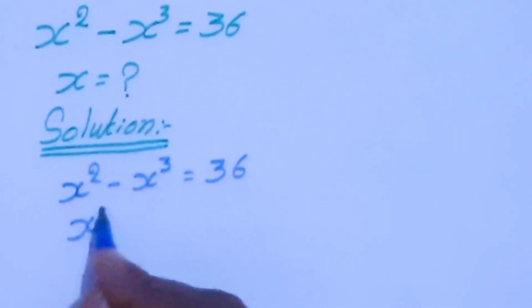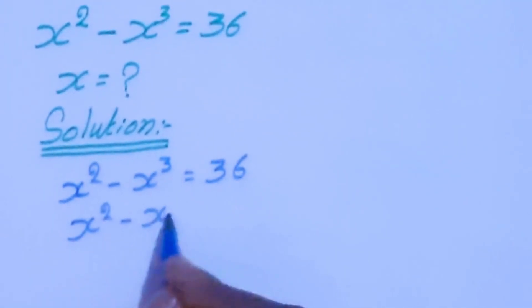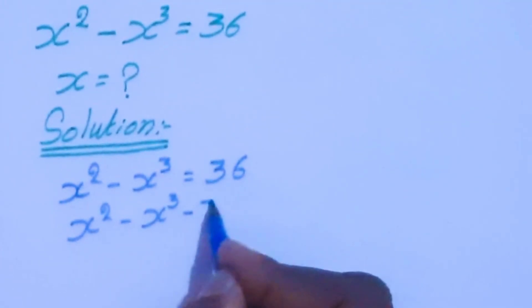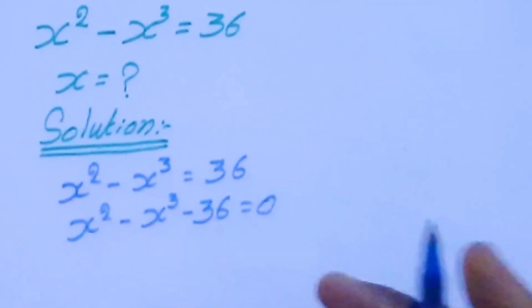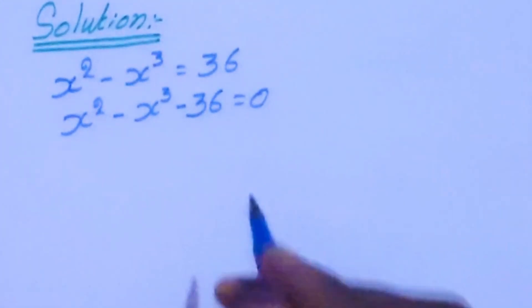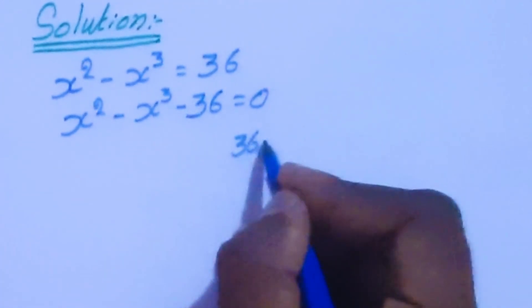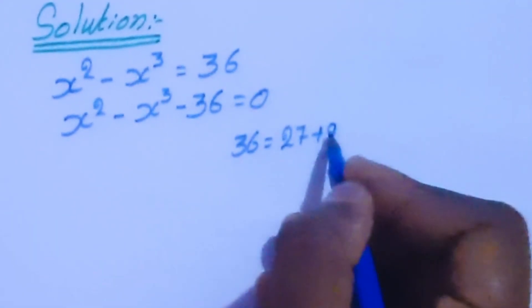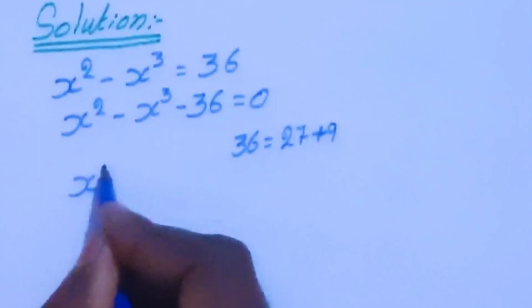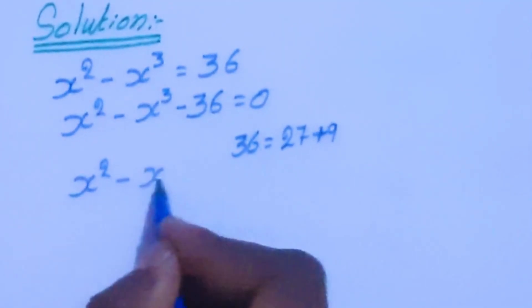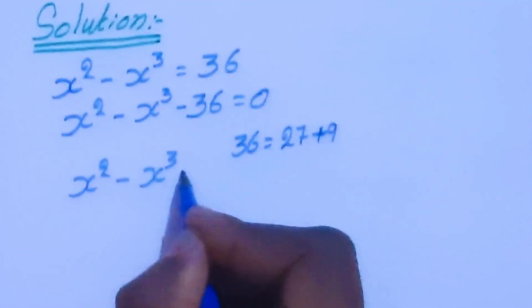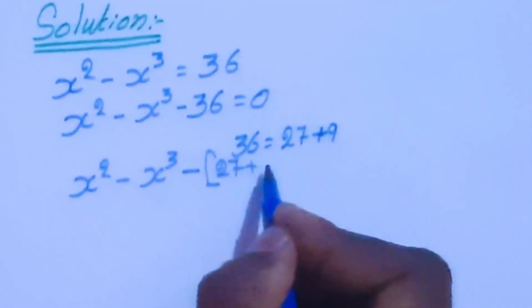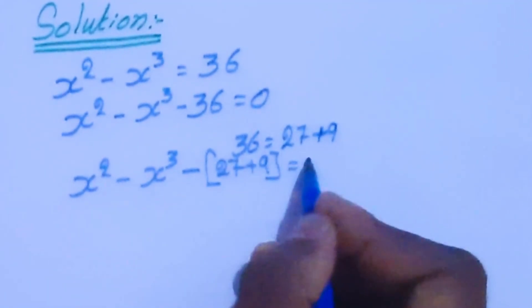Now x squared minus x cubed — we are moving this 36 to the left hand side, so minus 36 equal to 0. Now this 36 can be written as 27 plus 9. So x squared minus x cubed minus 27 plus 9 equal to 0.